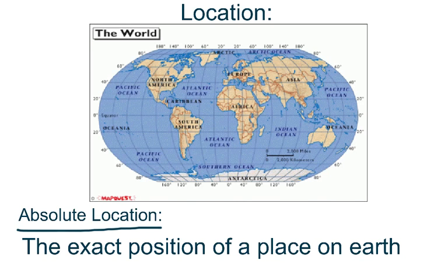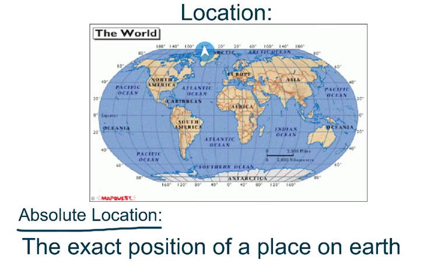The second form of location is absolute location: the exact position of a place on earth. On this map you see lines of latitude going across and longitude coming down, and numbers around the globe giving exact locations — these are known as coordinates. Coordinates are used to pinpoint exact locations and positions of a place on earth. How many of you are familiar with Google Maps? That app uses absolute location — coordinates to pinpoint exact positions of where you need to be and where you're going.